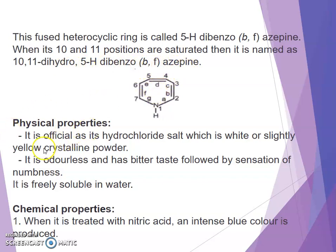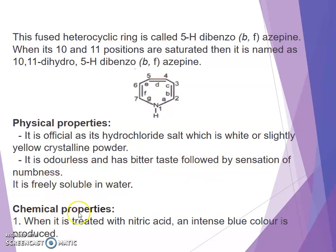Physical property: imipramine is official as its hydrochloride salt, which is a white or slightly yellow crystalline powder. It is odorless and has a bitter taste followed by a sensation of numbness. It is freely soluble in water. Chemical property: when treated with nitric acid, an intense blue color is produced.